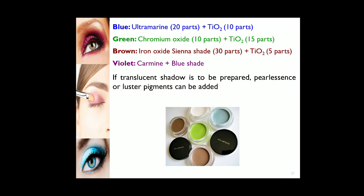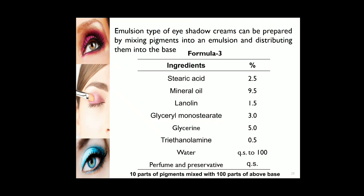For blue shades, ultramarine plus titanium dioxide can be used; adding titanium dioxide changes the shade. For green, chromium green is used, and titanium dioxide can again modify the shade. Emulsion-type eye shadow creams are prepared by mixing pigments into the emulsion and distributing them into the base. The formula contains 10 parts of pigments mixed with 100 parts of the above base. Adding coloring agents to the base produces the colored eye shadow.